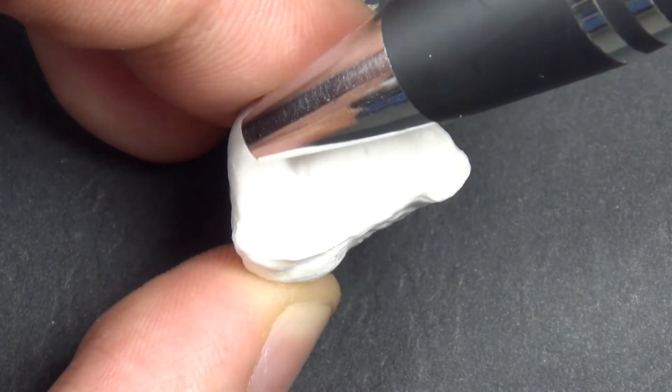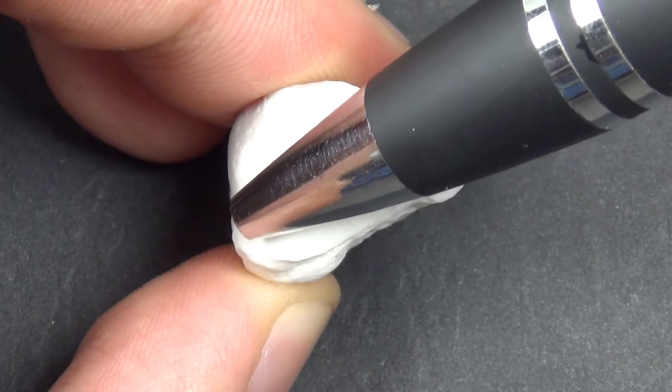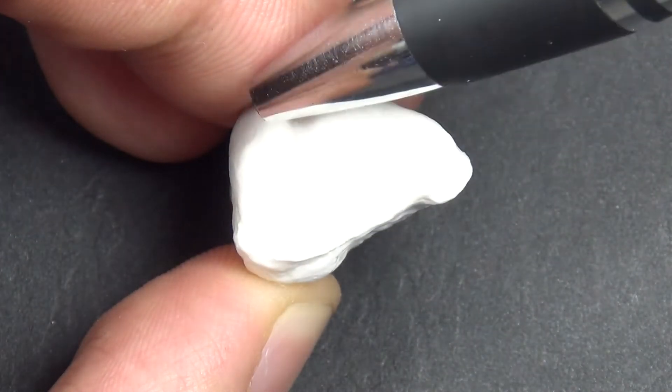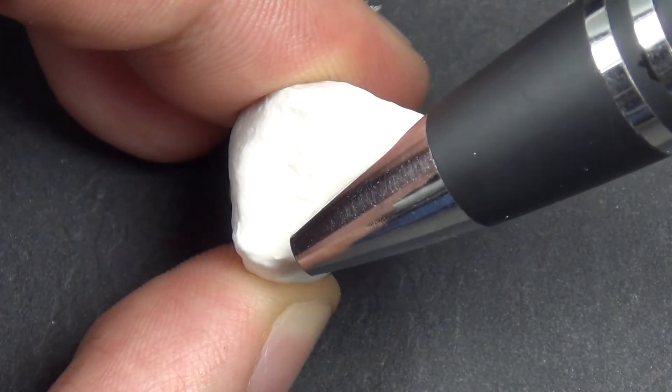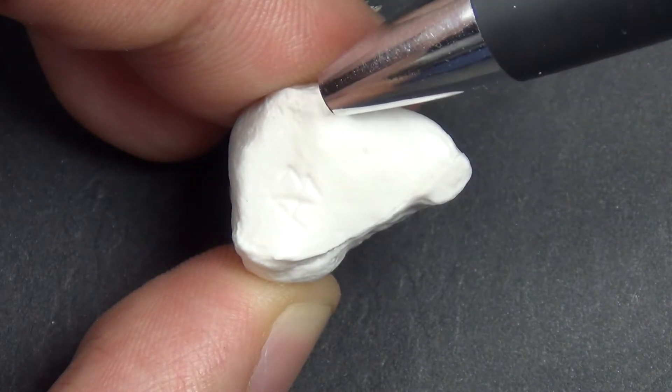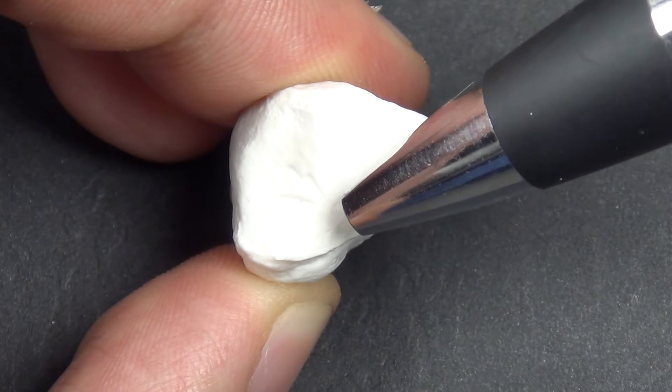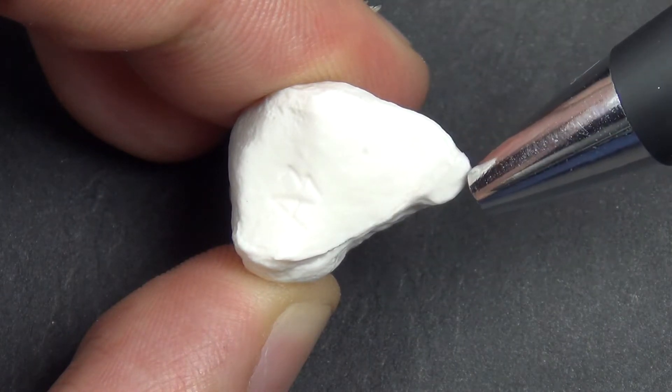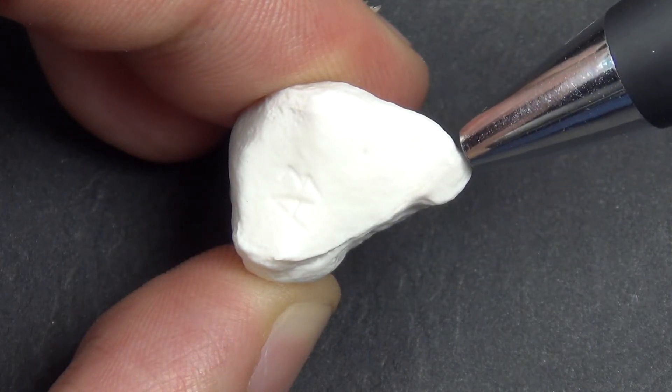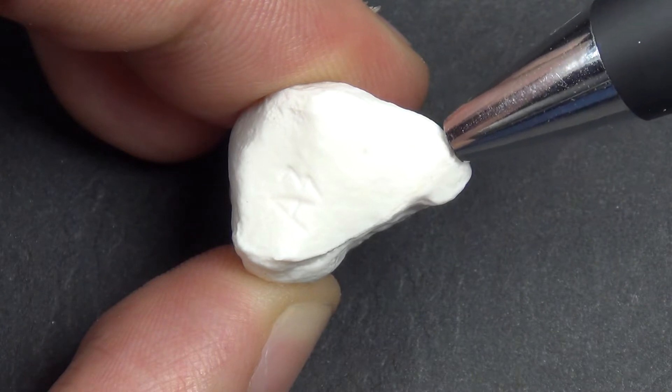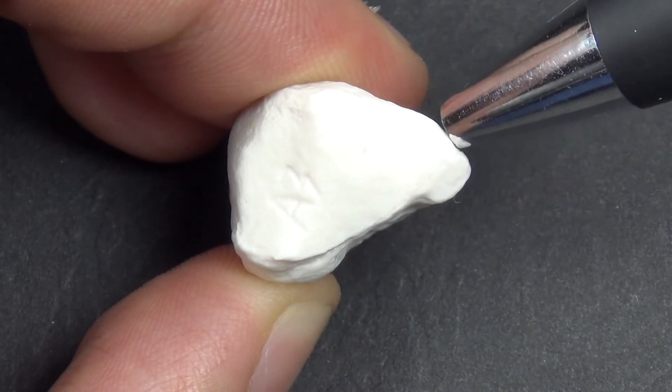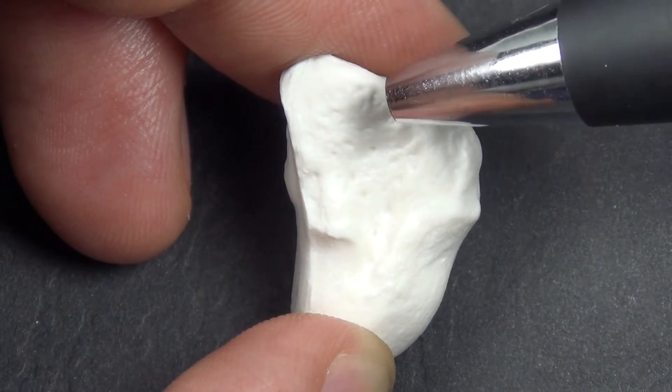The lateral border of the distal surface contains a concave strip, and that's for the base of the second metacarpal. The middle portion contains a large facet, and that's for the base of the third metacarpal. And on the medial border, there's a small concave square-shaped facet, and that's for the base of the fourth metacarpal.